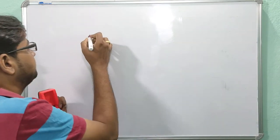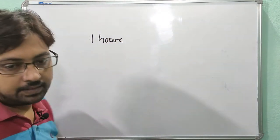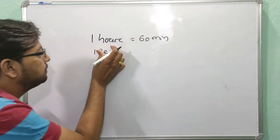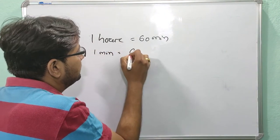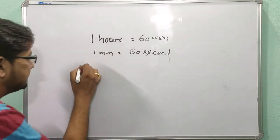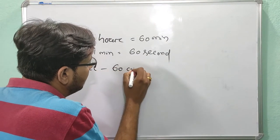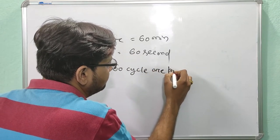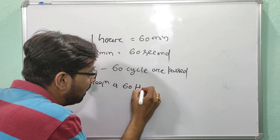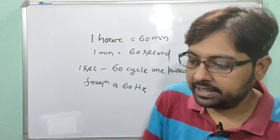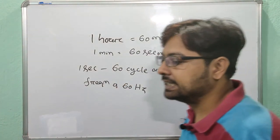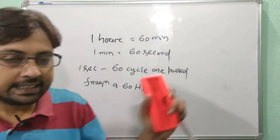The logic Tesla used behind 60 Hertz was: in one hour there are 60 minutes, in one minute there are 60 seconds, so in one second 60 cycles pass — therefore the frequency is 60 Hertz. He calculated it in that way.